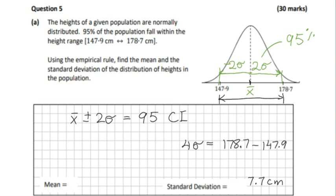The midpoint there is going to be the mean. So the mean will be 147.9 plus 178.7, all over 2—take it to halfway. We will get 163.3 centimeters.